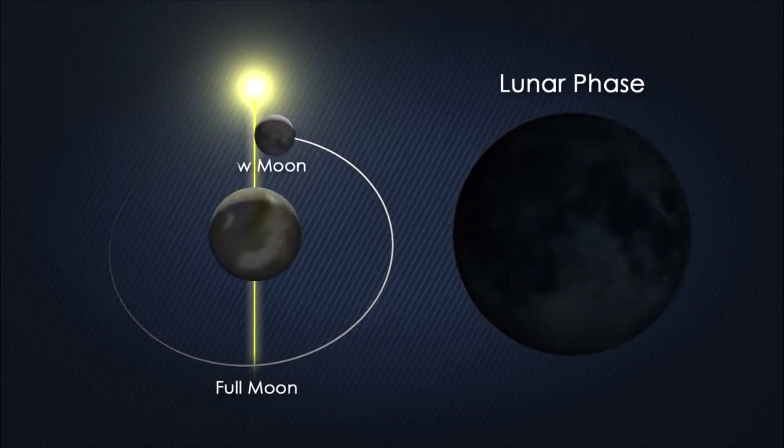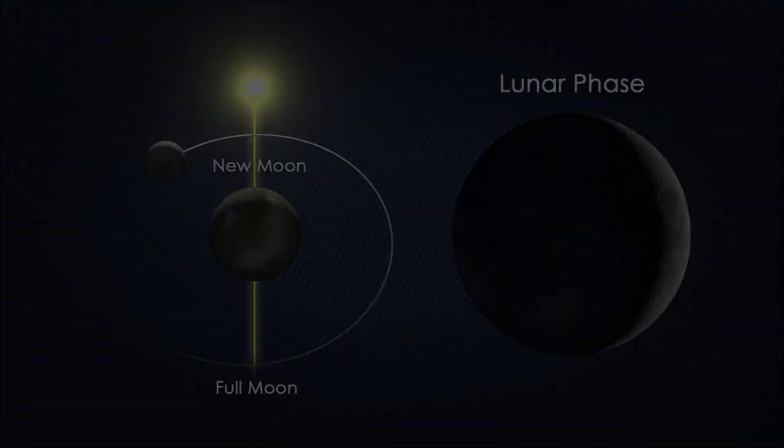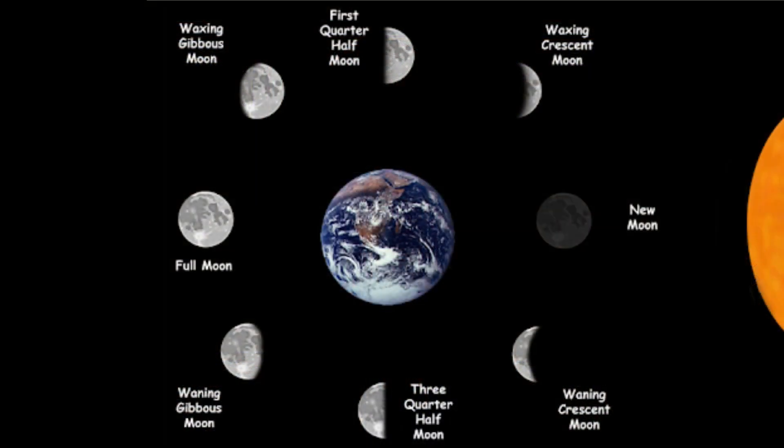The lunar phases gradually change as the orbital position of the Moon around the Earth and the Earth around the Sun change over a period of 29.5 days. This period of approximately 29 days is called a synodic month. The Moon has eight key phases during its movement around the Earth: the New Moon, Waxing Crescent, First Quarter, Waxing Gibbous, Full Moon, Waning Gibbous, Third Quarter, Waning Crescent — then going back to the New Moon, and the cycle keeps permanently repeating itself.